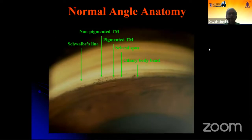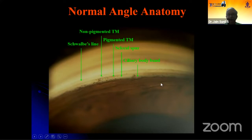This is how a normal angle anatomy would appear. From anterior to posterior, the Schwalbe's line is the first structure you need to identify, followed by the trabecular meshwork, then the scleral spur, ciliary body band, and the iris root.